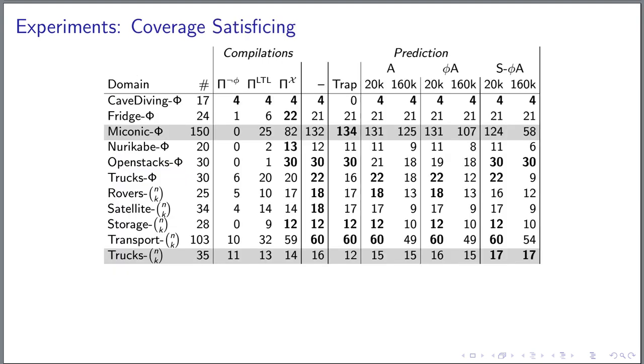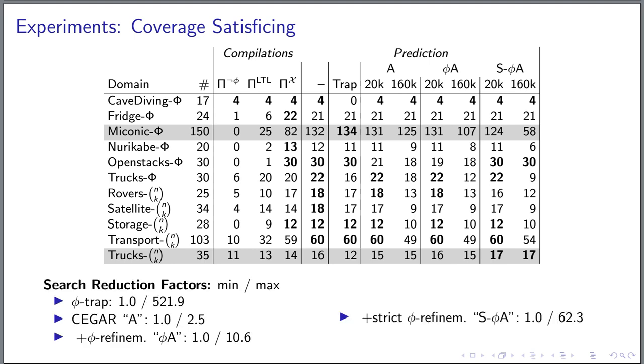Here are some results for the satisficing part. As we expected, the compilation approaches cannot really hold up to even the simple baseline pruning configuration. Unfortunately, however, our prediction methods could neither really improve over this simple pruning baseline. Coverage was increased in just two domains and also in terms of the actual search reduction, the results look rather mixed.